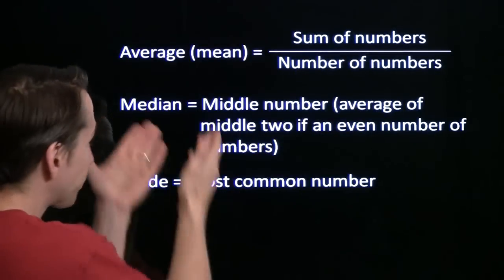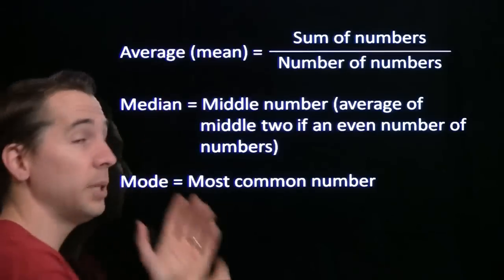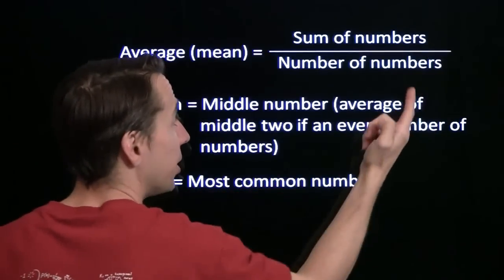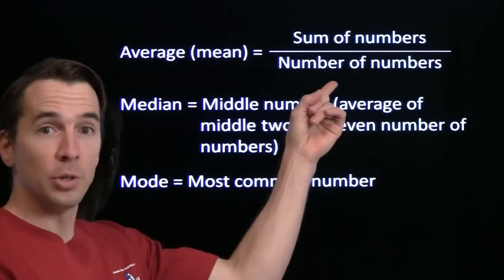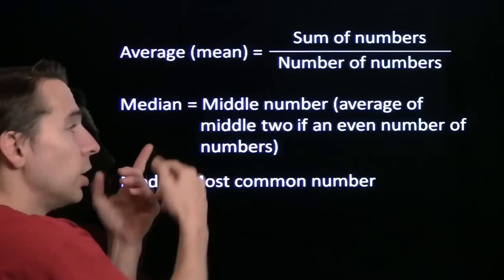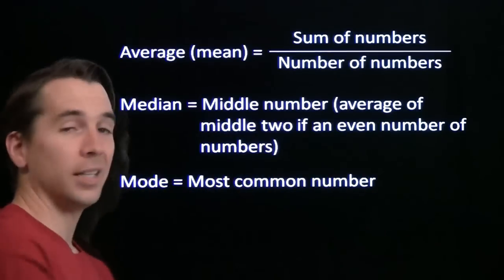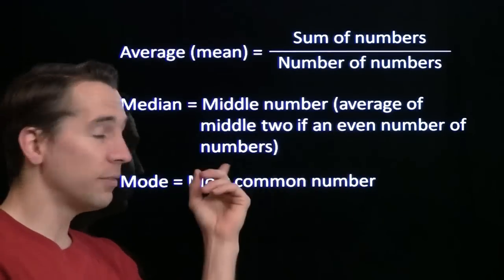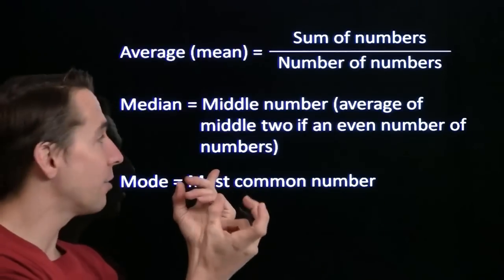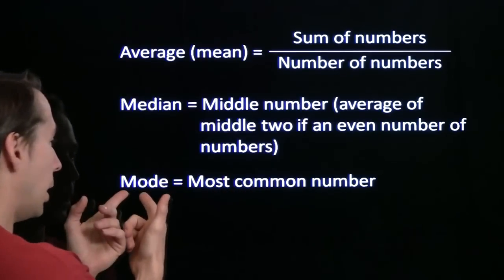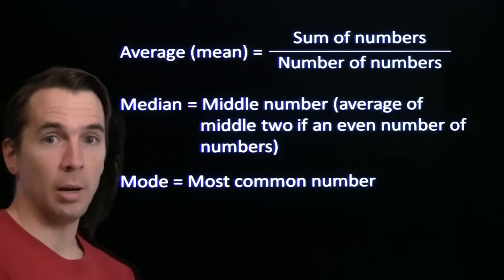All right, quick recap. The average, which we sometimes call the mean or the arithmetic mean, that's the sum of the numbers divided by how many numbers you have. The median, you list all the numbers from lowest to highest, and you take the number in the middle. If you've got an even number of numbers, you just take the average of the two in the middle. And then the mode is the most common number.